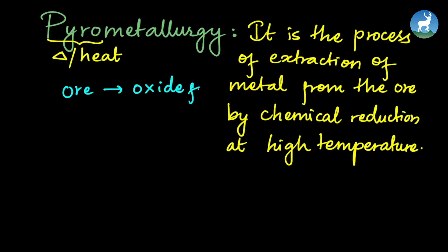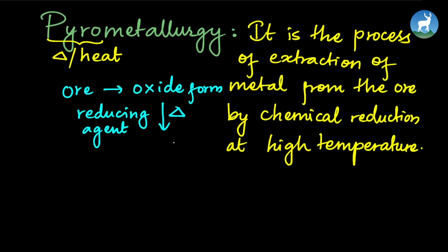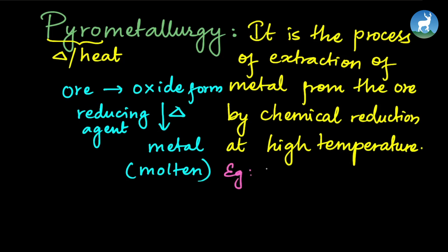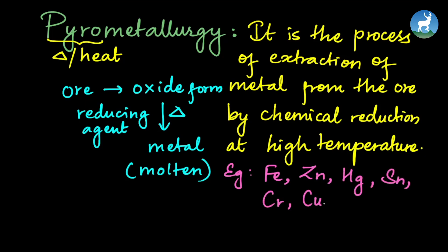In pyrometallurgy, the first step is to remove water from the ore, then convert it to oxide form. In the oxide form, we heat strongly with a suitable reducing agent such as carbon monoxide to get free metal in molten state, and then purify it. Metals extracted this way include iron, zinc, mercury, tin, chromium, and copper.